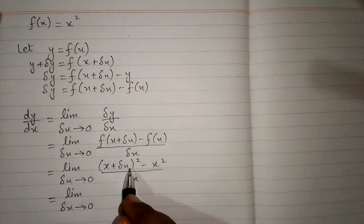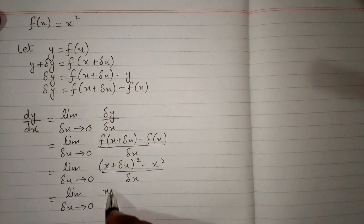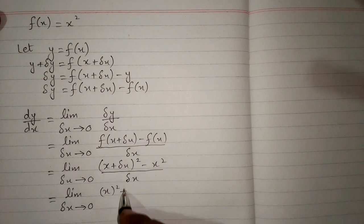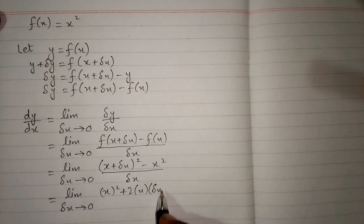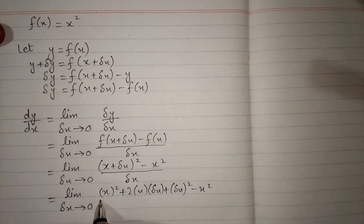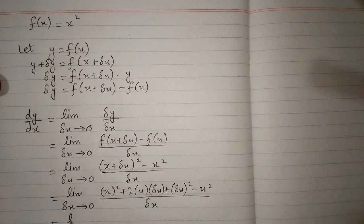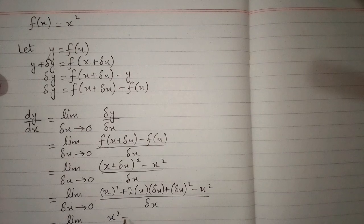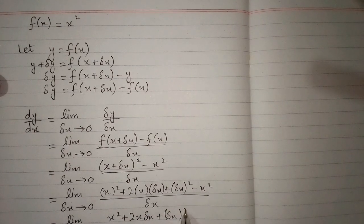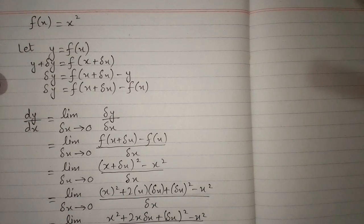We will expand the bracket using the algebraic identity a plus b whole square. This becomes x squared plus 2 times x times delta x plus delta x squared, minus x squared, all upon delta x. Now x squared minus x squared is 0, so those terms cancel.